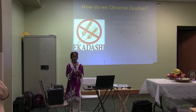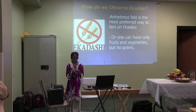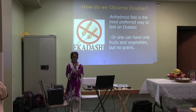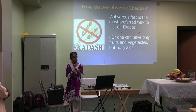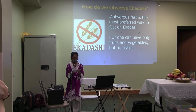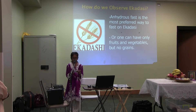How do we observe Ekadashi? An anhydrous fast, which doesn't allow drinking water, is the most preferred way to fast on Ekadashi. Such a fast should be broken, preferably, with abhishek water or milk. If one can't keep an anhydrous fast on Ekadashi, they can take fruits and vegetables, but no grains.